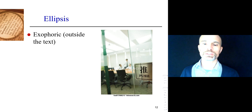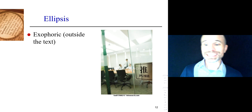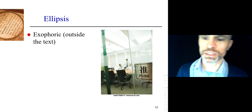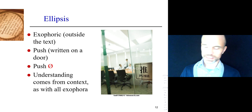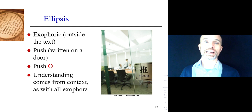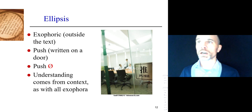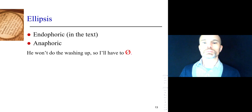It's also possible for ellipsis to be exaphoric — outside of the text. For example, you see a sign on a glass door that says 'push.' Push what? Because of the placement of the sign, you realize it's saying 'push this door.' You're unlikely to see a sign saying 'push' and then push something other than the thing the sign is on, because of your understanding of how signs work as a genre — they're placed on or close to the thing they're giving information about. So ellipsis is possible exaphorically as well.